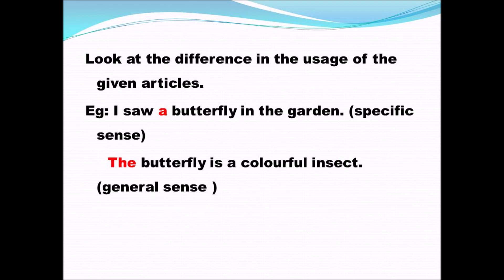Look at the differences in the usage of articles. 'I saw a butterfly in the garden' — here a butterfly is used because it may be any butterfly; it is introduced for the first time. 'The butterfly is a colorful insect' — here the butterfly is used in a general sense referring to butterflies as a class, and also because butterfly was already mentioned, so we use the for the second reference.